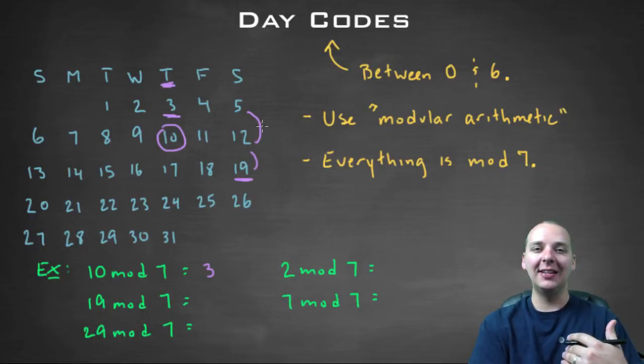Which I guess would be fourteen, you would get basically a remainder of five. So nineteen modulo seven would be five.